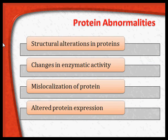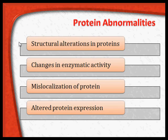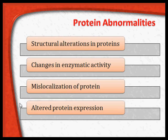Finally, after chromosomal, DNA, and RNA abnormalities, there could be an abnormality in the final product of all these mechanisms — the protein. The DNA and RNA code for proteins, and if the protein that is manufactured is abnormal, that can result in tumor formation. These include structural alterations in proteins, changes in enzyme activity, mislocalization of the protein, and altered protein expression in different cells.